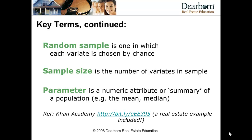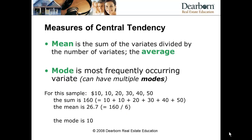Once you've got the data, a parameter is a number that describes the data — it provides a summary. Examples are the mean, the median, and the mode. Those are parameters we'll use to describe the data. There's also a link to a Khan Academy lecture; when I reviewed it, at the end he actually throws in a real estate example, which was a nice coincidence for us.